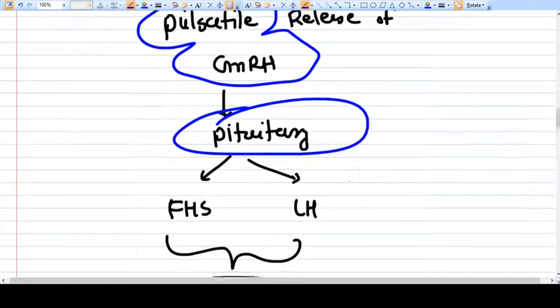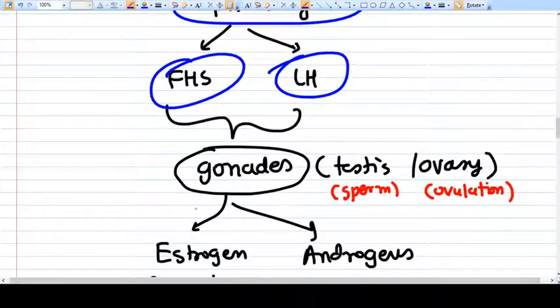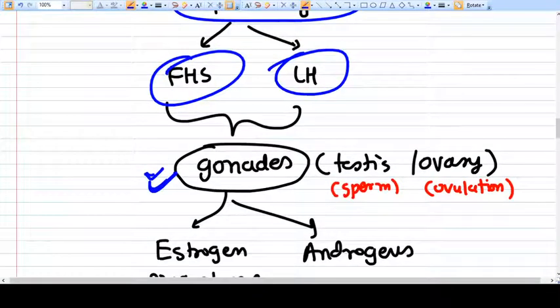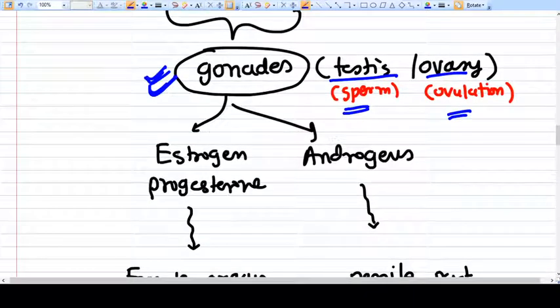These hormones will go and act on gonads - particular gonads like testis and ovaries. These gonads will act on the testis to produce sperm through spermatogenesis, and on the ovary to do ovulation.